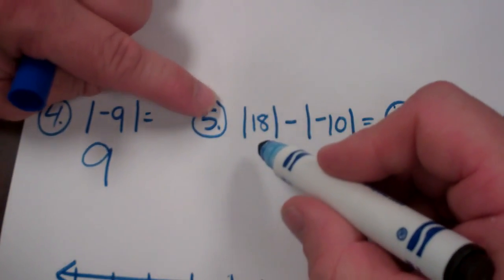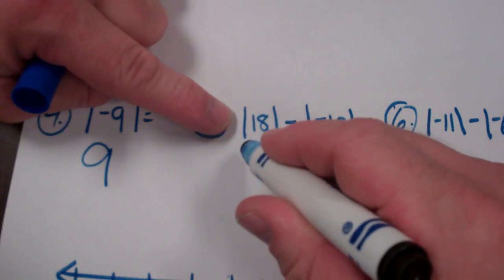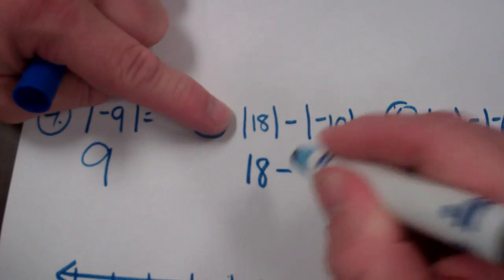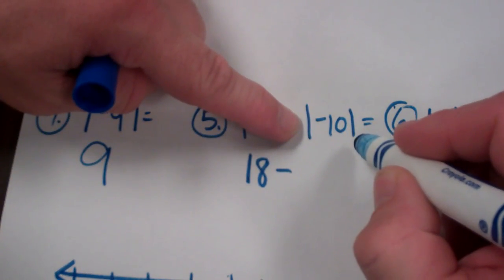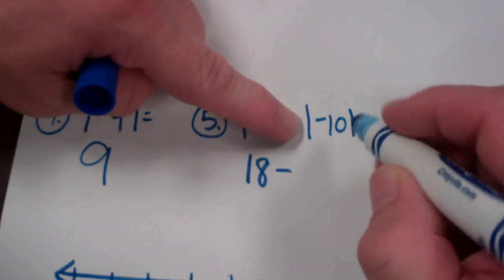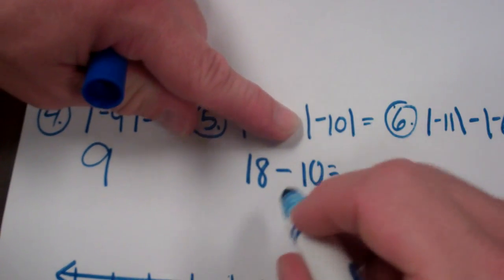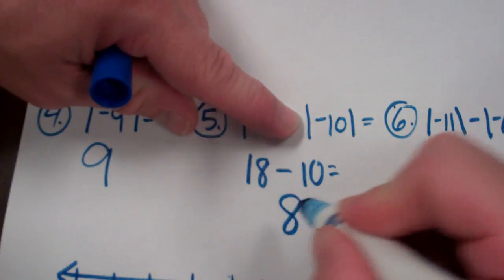This one, I have the absolute value of 18. Well, remember, always expressed as a positive. So 18 minus the absolute value of negative 10, always expressed as a positive. How far is negative 10 from zero? 10 away. So now my problem is 18 minus 10, which is 8.